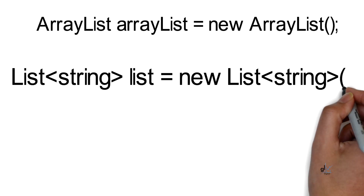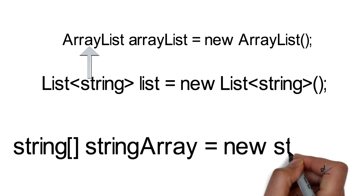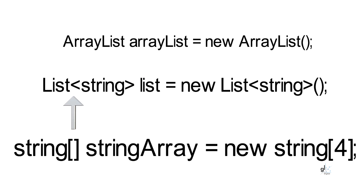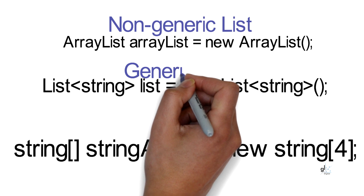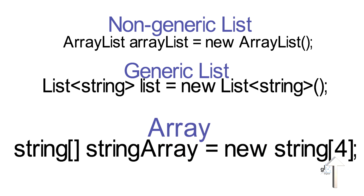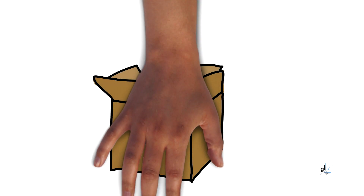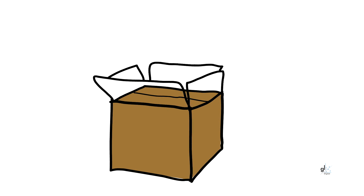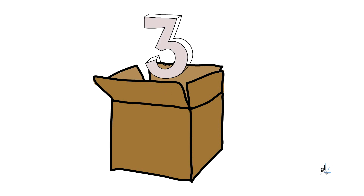Let's look at a simplistic example to help us understand generics in C-Sharp. We are going to look at a C-Sharp collection type, the ArrayList, versus a C-Sharp generic collection type, the generic list. An ArrayList provides the advantage of encapsulating the functionality of dynamically increasing the size of the list as more items are added to the ArrayList. Unlike with an array, we do not have to define an ArrayList with a size — it will dynamically handle its size as items are added.